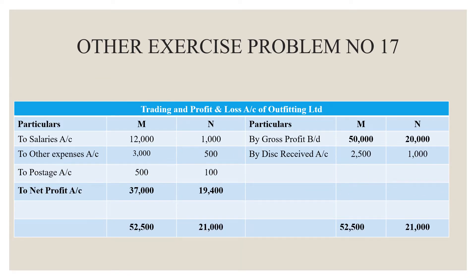Next is the profit and loss account, which brings down the gross profit: 50,000 for M department and 20,000 for N department. On the credit side, discount is 2,500 and 1,000 rupees for M and N departments. On the debit side, salaries are 12,000 for M and 1,000 for N department; other expenses are 3,000 for M and 500 for N; postage is 500 for M and 100 rupees for N. The resulting net profit is 37,000 for M department and 19,400 for N department. Grand totals are 52,500 for M and 21,000 for N department.